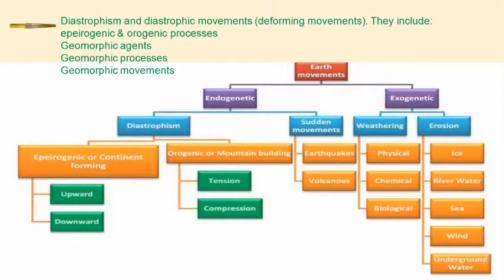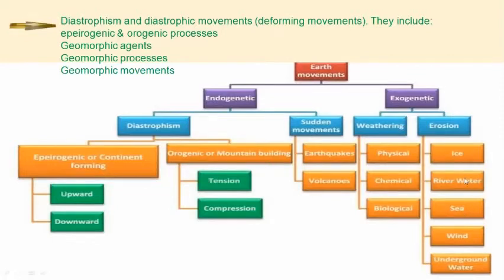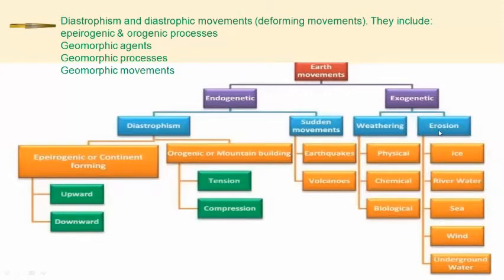There is another term called geomorphic agents. These are the mobile agents or mobile medium — things which can move, like running water, sea water, ice mass, glacial sheets, and wind. The geomorphic agents are those mobile mediums which remove, transport the eroded materials, and also deposit the eroded materials somewhere else.